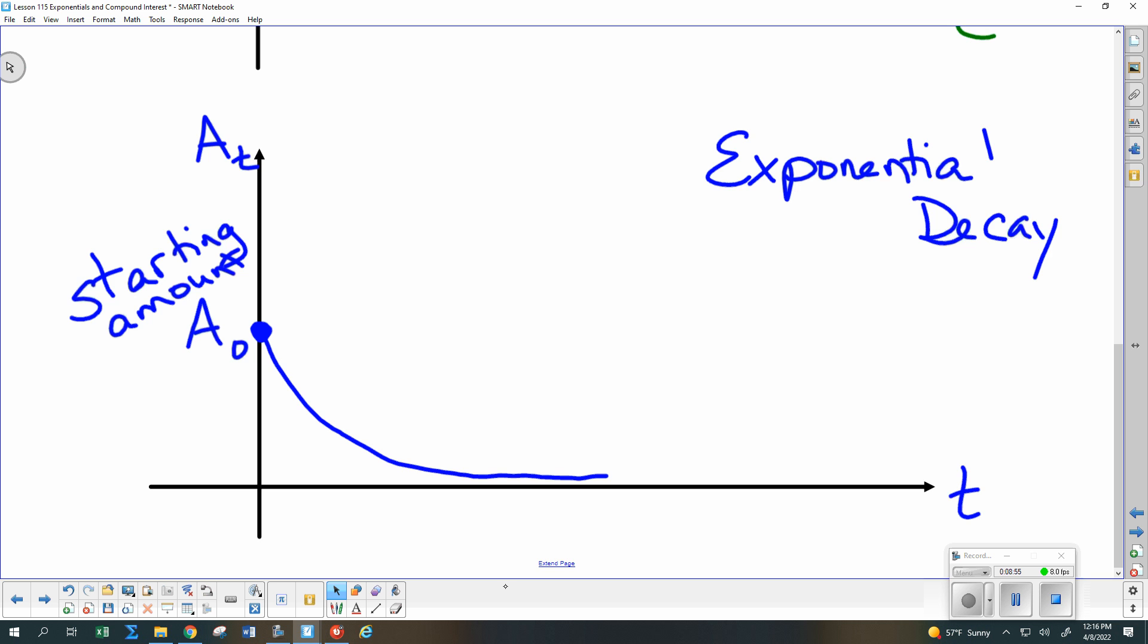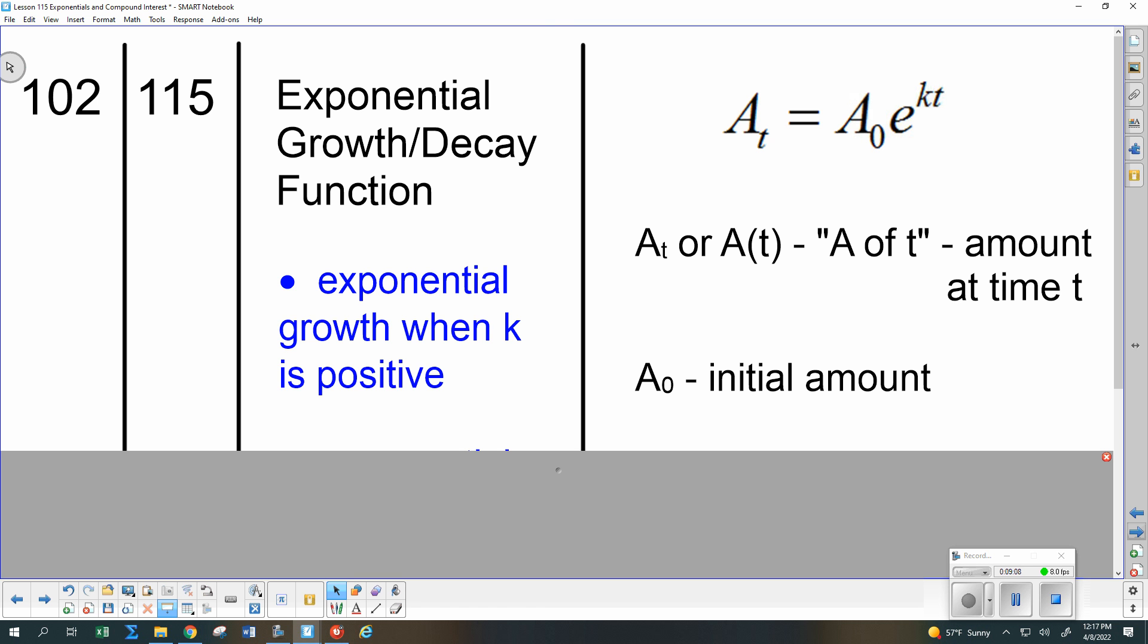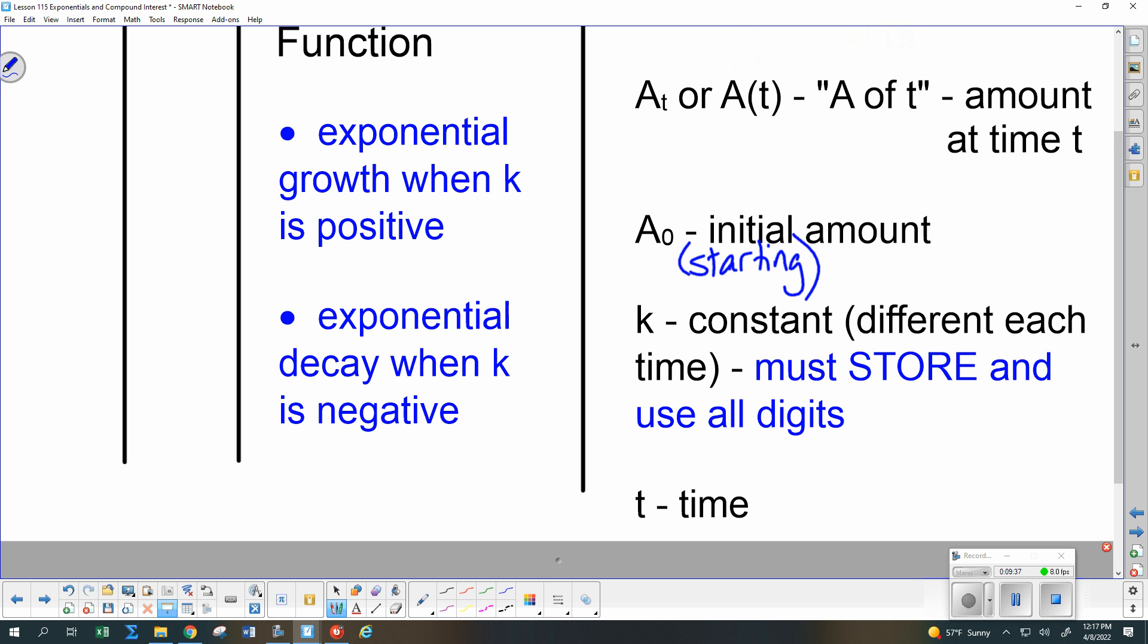So now let me give you guys the equation, the formula to write down, that we're going to be using on these exponential growth and decay problems. And that is the amount at time t equals the initial or starting amount times e to the kt. k is a constant, very much like variation problems. Each variation problem had a different k value. Each exponential growth problem will have a different k value. But k will stay the same for that whole problem. And t will be the amount of time. Now a couple other things I want to point out. If k is positive, that's when we're going to have exponential growth. And if k is negative, that's when we're going to have exponential decay. That's how we can tell the difference in the two.